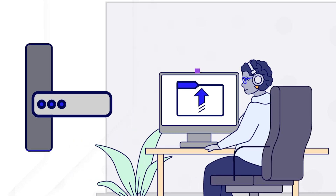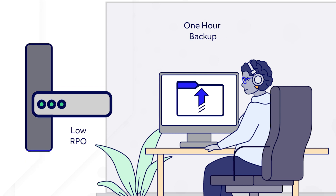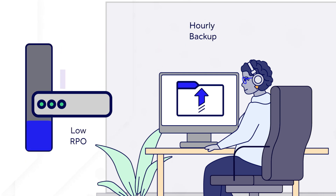For instance, if you can tolerate losing one day's worth of data, then your RPO is one day and you should backup your data nightly. However, if you can only lose an hour's worth of data, you'll have to perform backups every hour.